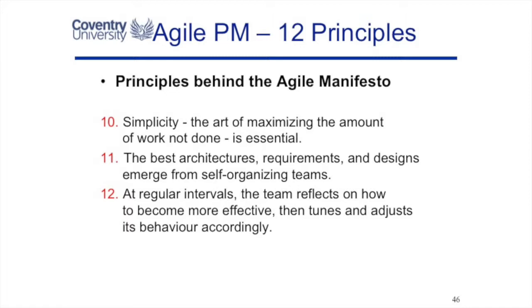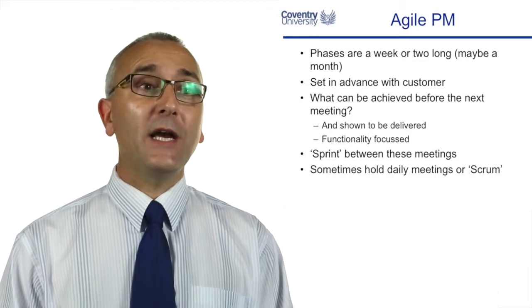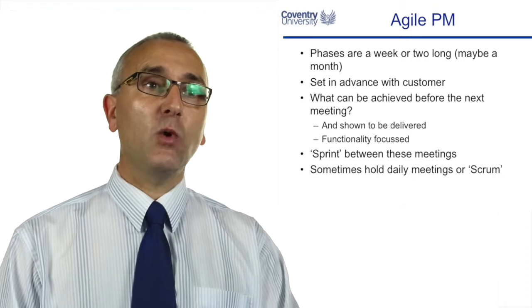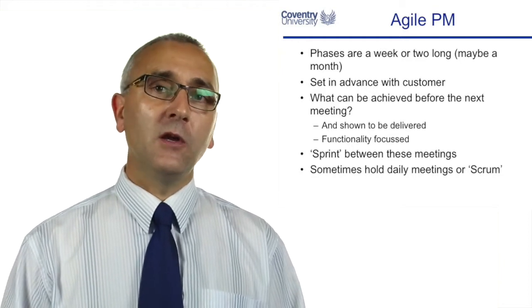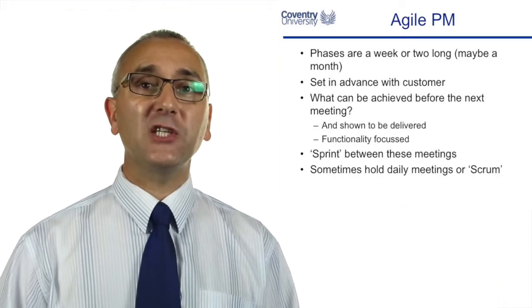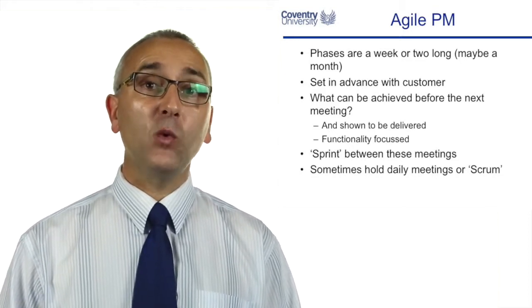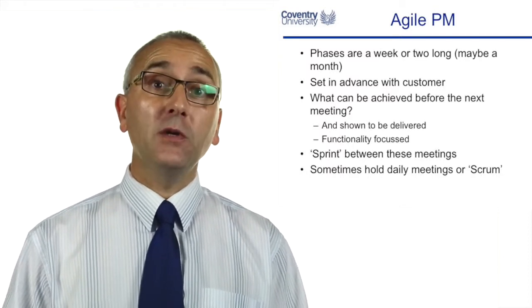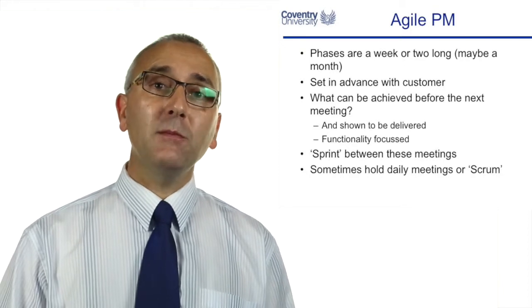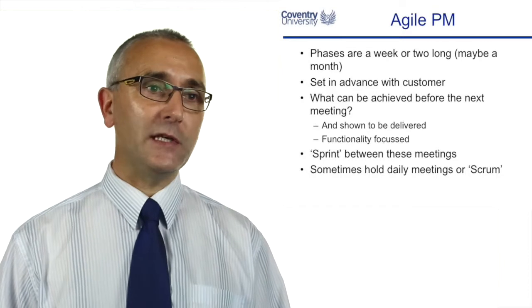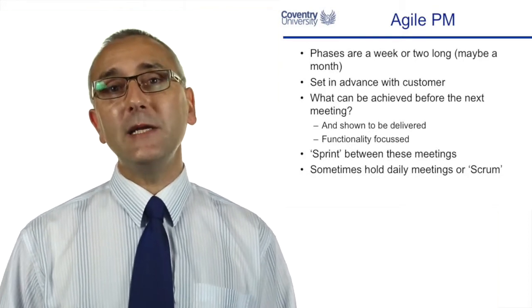In agile, phases might be one or two weeks long, with customer showcase meetings at regular periods. Instead of telling people exactly what to do, agile asks: what can you achieve before the next showcase? The customer is coming back next Friday — what working software will be ready by then? It's shown at that Friday meeting, focused on the functionality the customer required, and we maintain that pace as we sprint between meetings in a sustainable way.